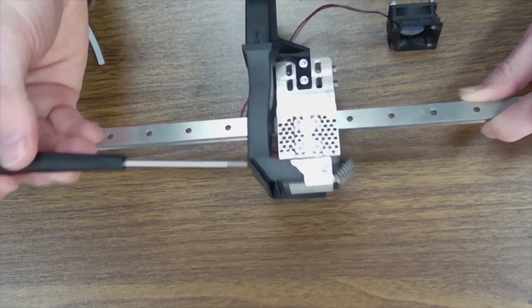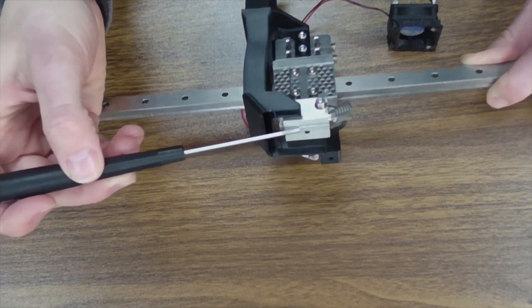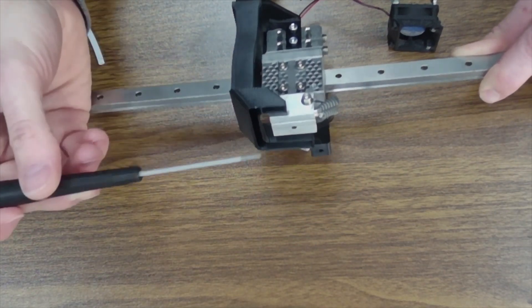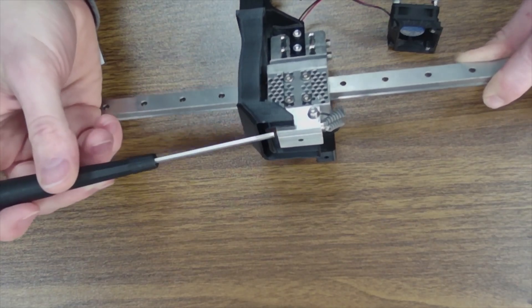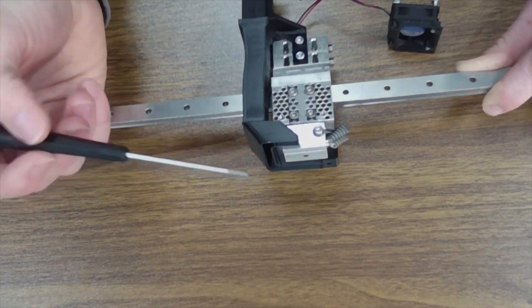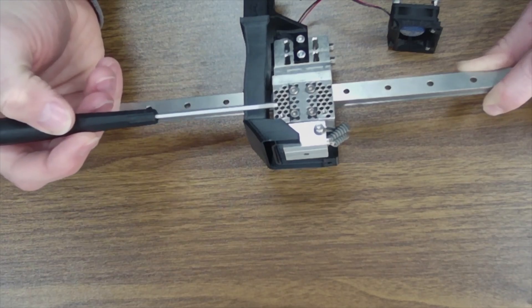Now if your printhead is dirty on the bottom face, if you've got a lot of debris, molten filament, you may have to clean that off before you can easily remove the tube. If you need to do that, you're just going to heat the printhead up, you're going to wire brush it off, and then you're going to try again.